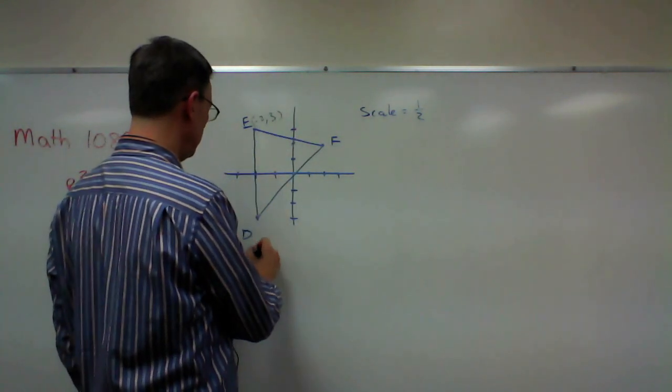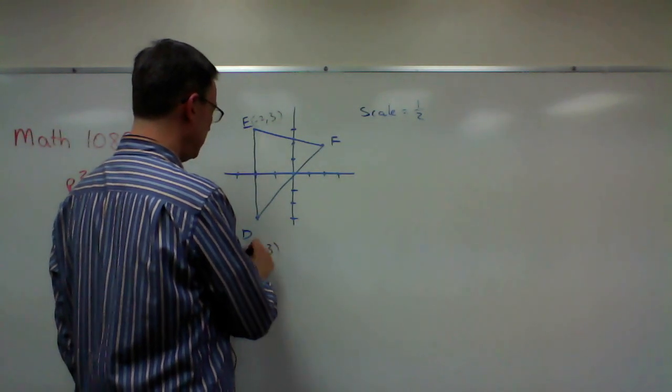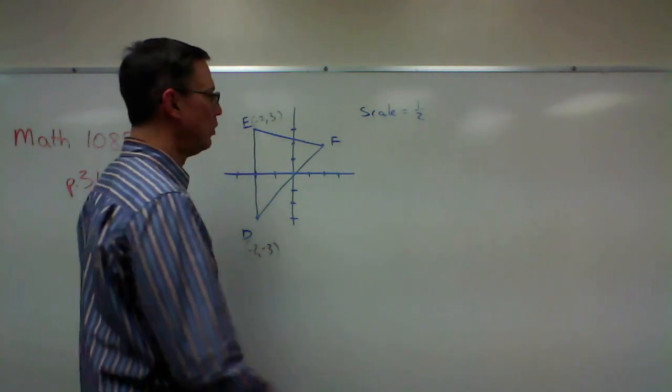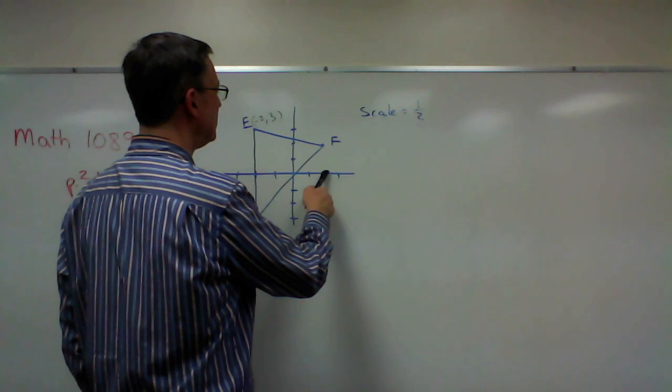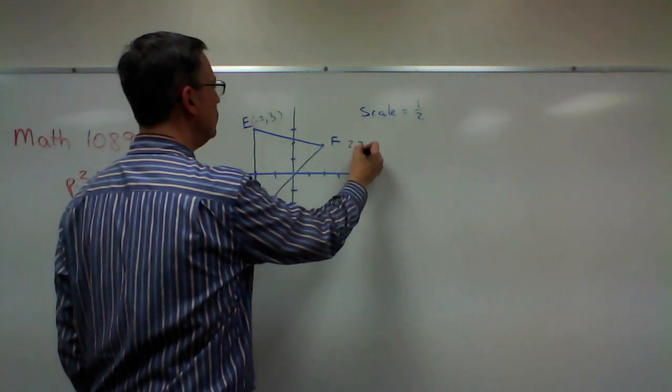This one is negative two, negative three. So I'm going to go ahead and label these points. And then this is the point two, two.